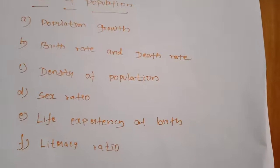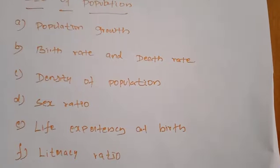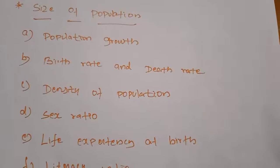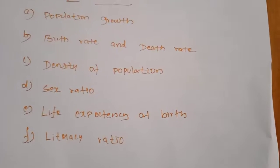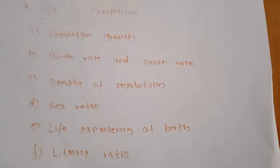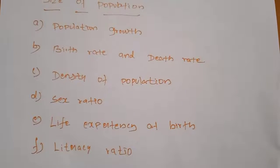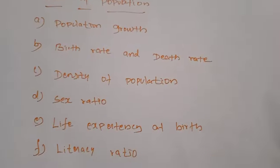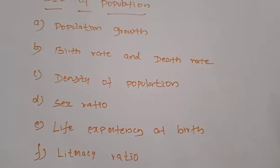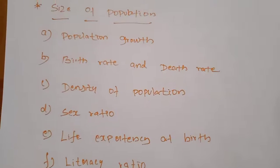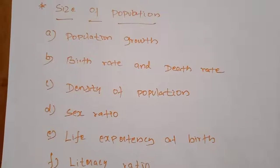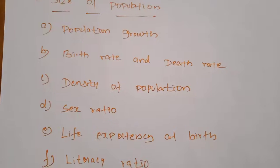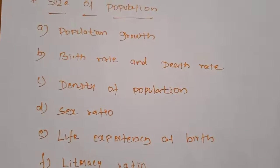Next, life expectancy at birth. Life expectancy at birth refers to the mean expectation of life at birth — approximately how many years a person is expected to live. The life expectancy has improved over the years. It is low when the death rate is high or instances of early death are high. On the other hand, life expectancy is high when the death rate is low and instances of early death are low.